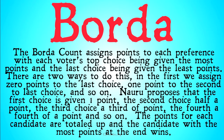However, there's another version of the Borda Count proposed by Nauru, where the first choice is given one point, the second choice is given half a point, the third choice is given one-third of a point, the fourth is given one-fourth of a point, and so on. Once these points are assigned, the points for each candidate are totaled up and the candidate with the most points wins.